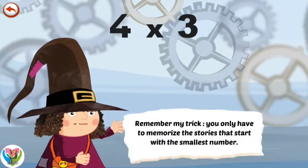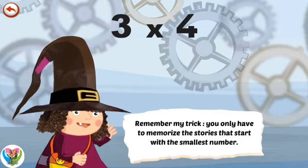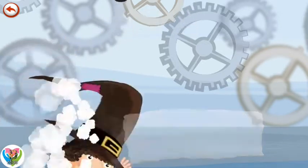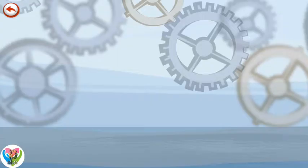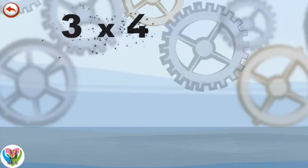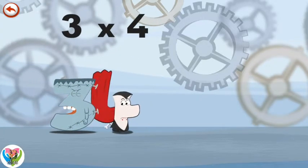Remember my trick, you only have to memorize the stories that start with the smallest number. What's the story of three times four? Threekinstein is a bit scared of Vamp 4's bite.